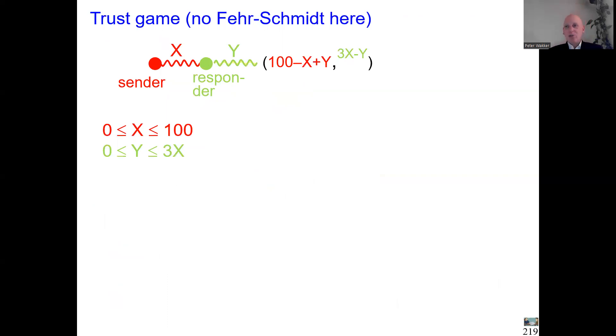So instead of further analyzing that game, let's go to another game, the trust game. It is quite like the ultimatum game, but one difference is, after the sender sends X, that amount is multiplied by 3 by the experimenter maybe, and only after that, the responder has to decide how much to send back. That's the difference. And I should already say, the Fehr-Schmidt model doesn't give many insights here.